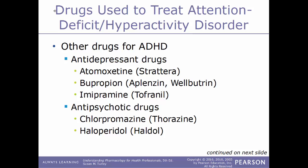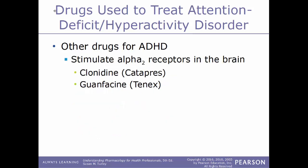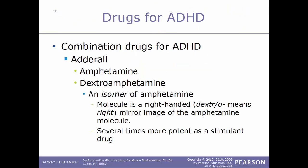Antipsychotics that can be used to treat ADHD include chlorpromazine (Thorazine) and haloperidol (Haldol). Other drugs that stimulate alpha-2 receptors in the brain include clonidine (Catapres) and guanfacine (Tenex). Combination drugs include Adderall, which is a combination of amphetamine and dextroamphetamine. Dextroamphetamine is an isomer of amphetamine — a right-handed mirror image of the amphetamine molecule — and is several times more potent as a stimulant.